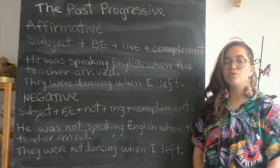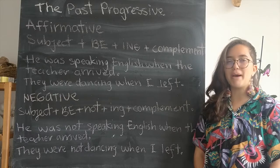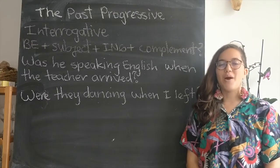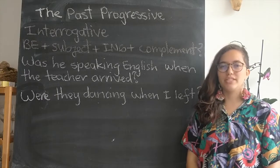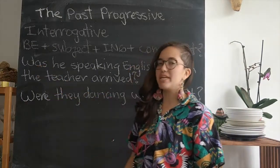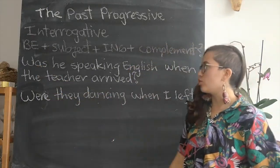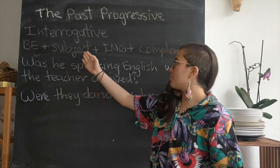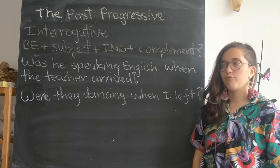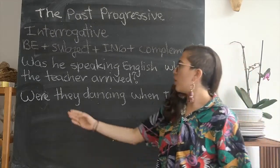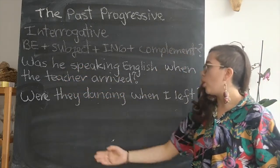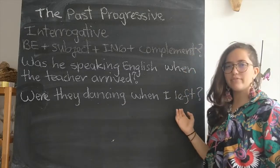Now let's look at how to ask questions in the past progressive. To ask questions, we put the verb 'be' at the beginning of the sentence. The structure is: 'be' plus subject plus -ing plus complement. For example: 'Was he speaking English when the teacher arrived?' 'Were they dancing when I left?'